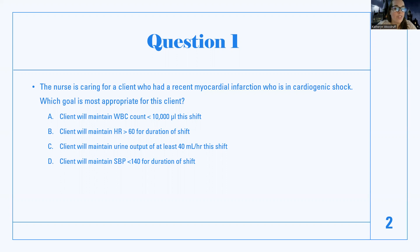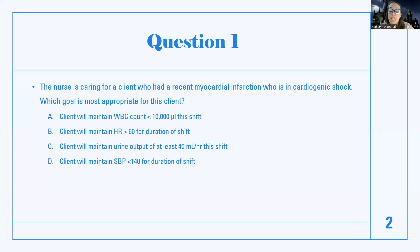Answer B: client will maintain heart rate greater than 60 for duration of shift. Their heart rate is probably already going to meet that in cardiogenic shock because they'll have an elevated heart rate due to cardiac overload. So that's not a good goal — they're not having a bradycardic issue. This would maybe be a good goal for a patient with neurogenic shock. Answer C: client will maintain urine output of at least 40 mL per hour. That's pretty good. If the heart is pumping better, the kidneys get good perfusion and good flow, which is a good sign of better cardiac output — so I like that one.